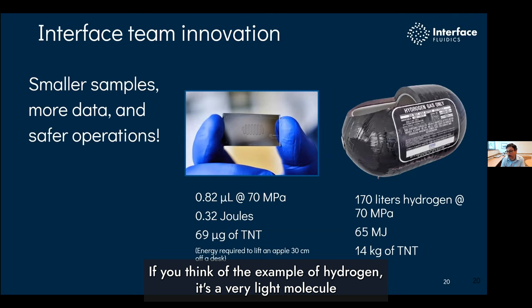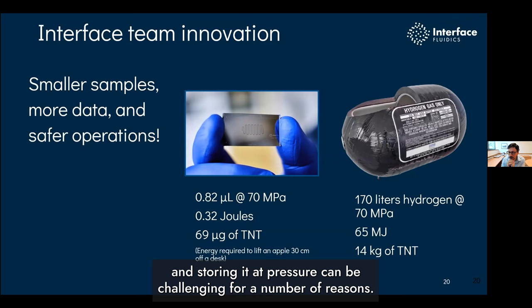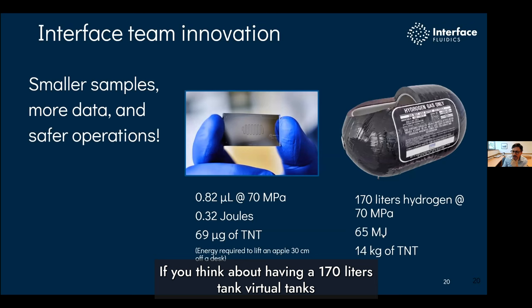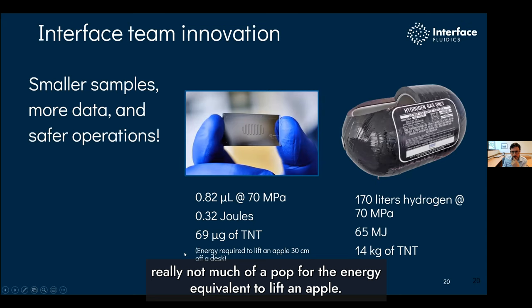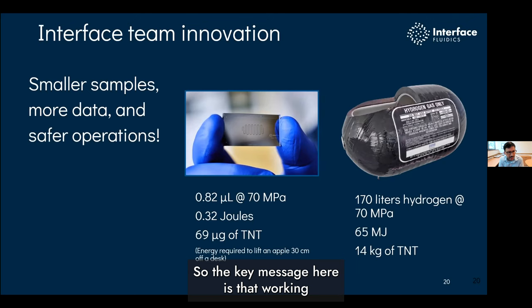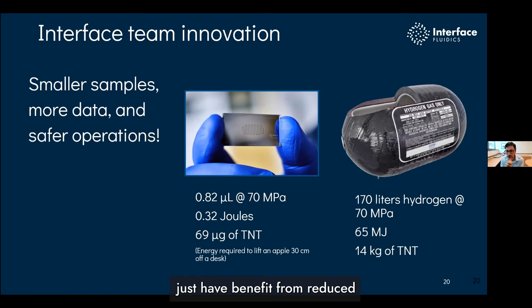Safety is top of mind whenever you're doing lab work, especially at high pressures. Here microfluidics offers such a better operating environment. Consider hydrogen — it's a very light molecule, and storing it at pressure can be challenging. A 170-liter commercial tank has an explosive pressure equivalent to a very substantial explosion. On a chip, you have radically less volume. There's really not much of a pop for the energy equivalent to lift an apple 30 centimeters. The key message is that working with smaller volumes, we benefit from reduced risk across the board.